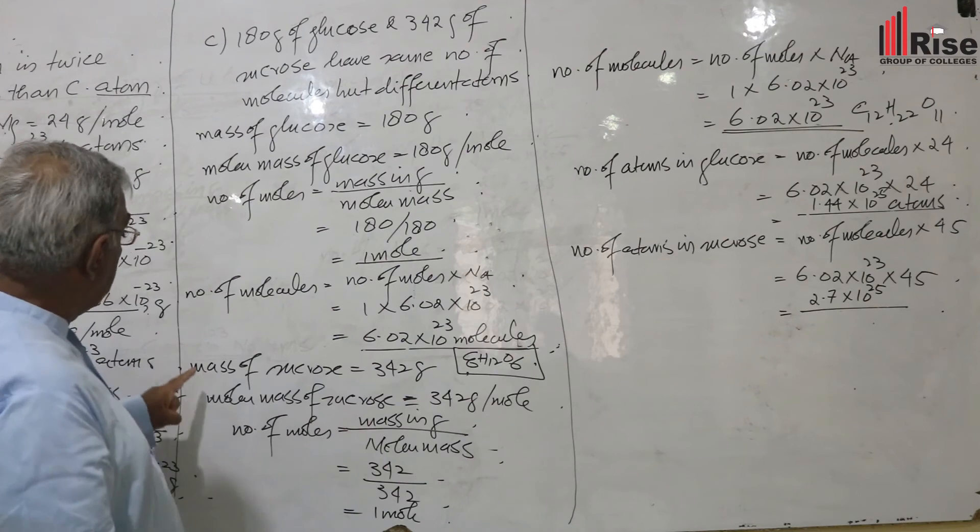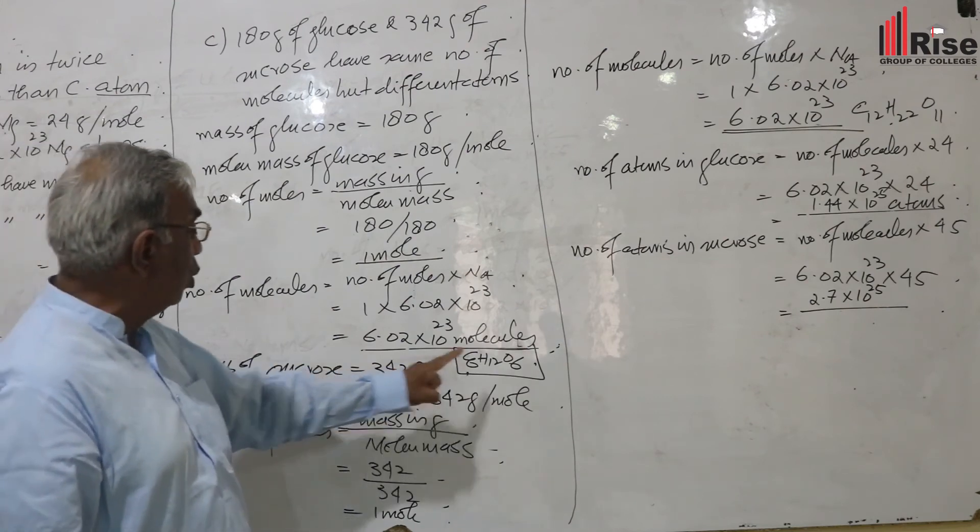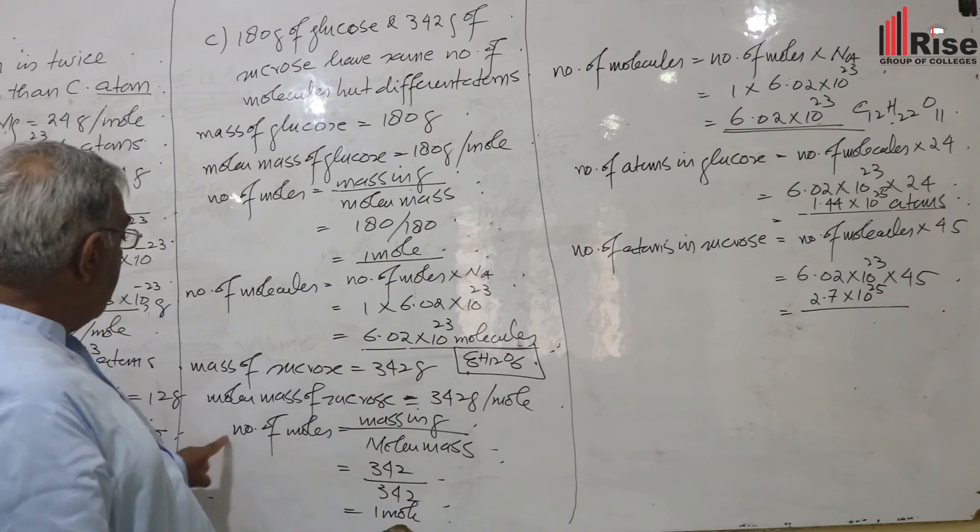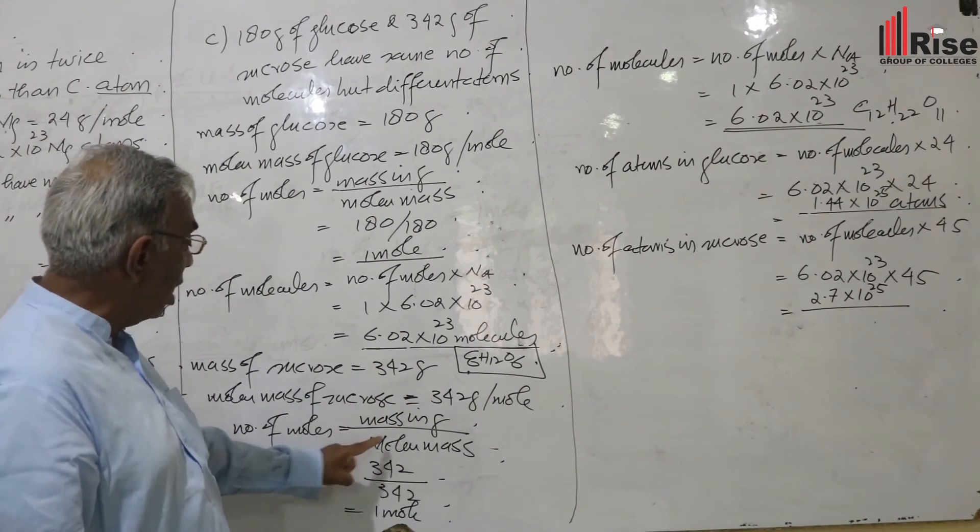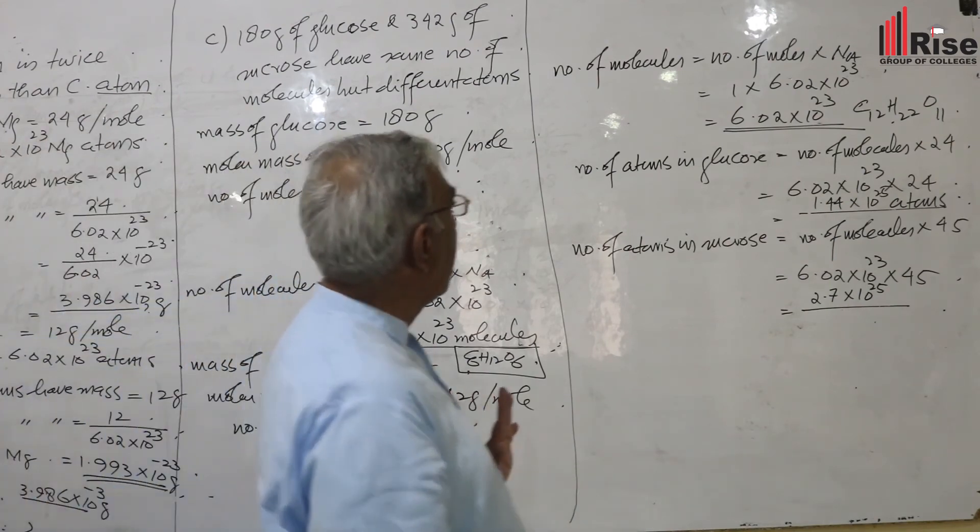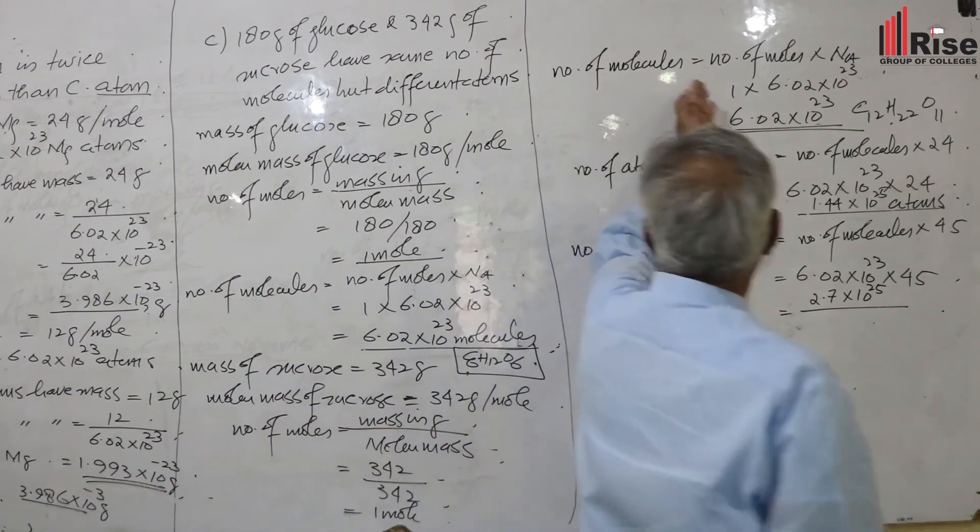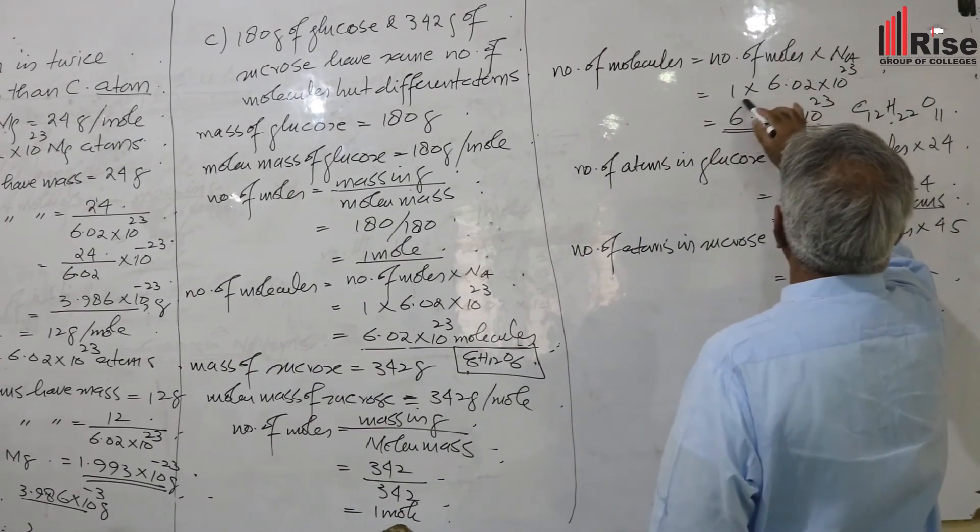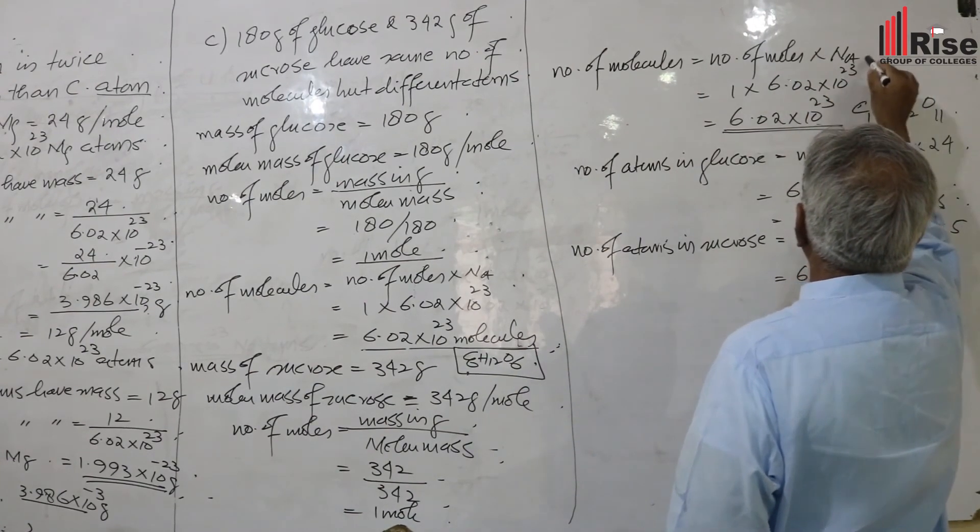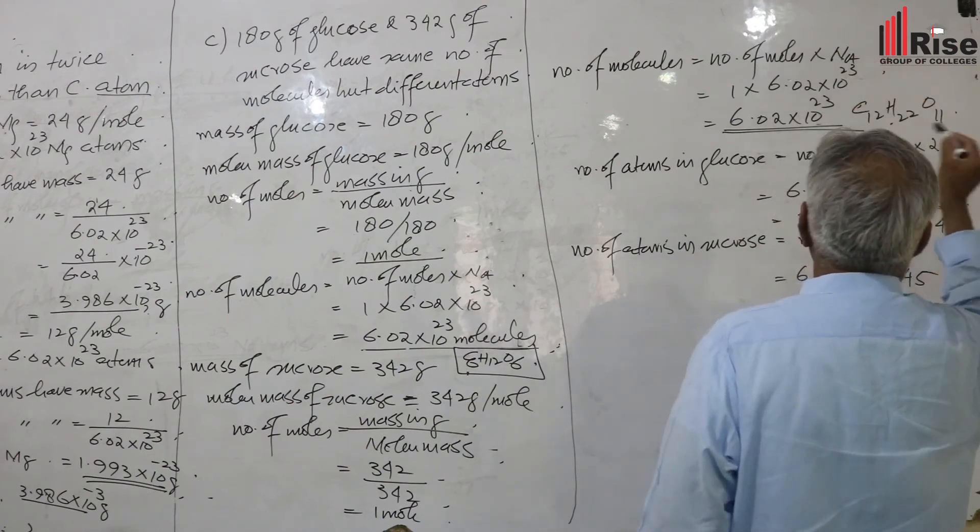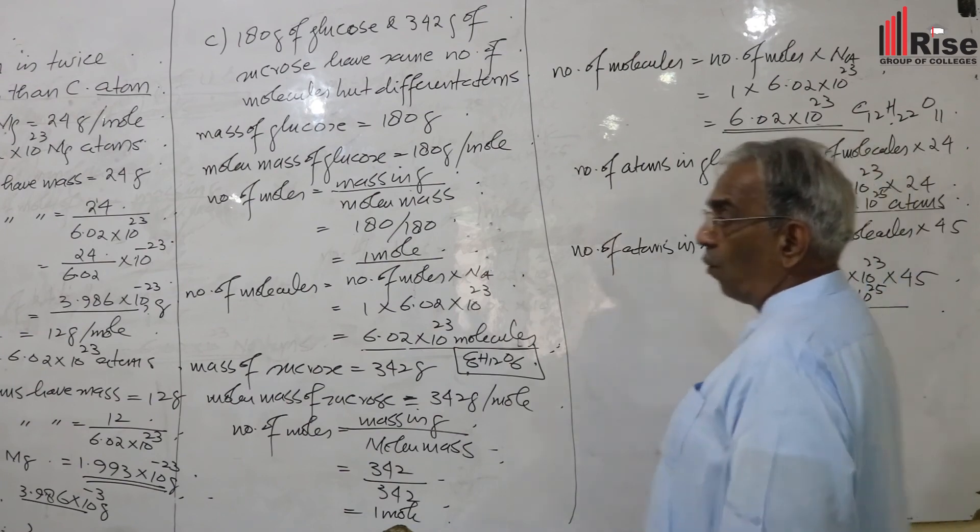Mass of sucrose is 342 grams. Molar mass of sucrose is 342 grams per mole. Mass in grams divided by molar mass: 342 divided by 342 equals one mole. Number of molecules equals number of moles multiplied by Avogadro's number: 6.02 into 10 to power 23 molecules.